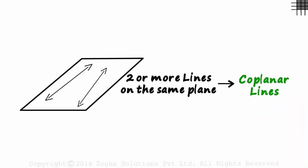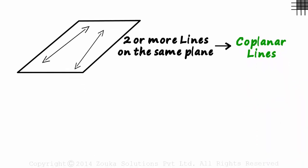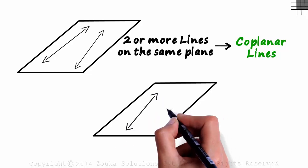When are two lines not coplanar? If two lines do not lie on the same plane like this, then they are non-coplanar.